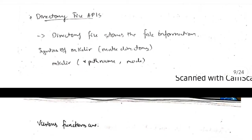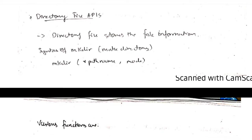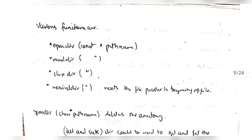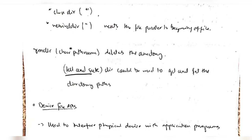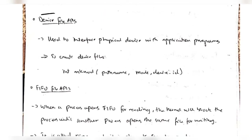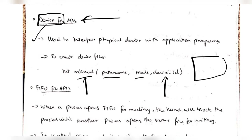Next we have the directory file APIs - the same operations as for device file APIs applied to directory files. We can use MKDIR to make a directory in a particular mode, open the file, read, close, and rewind to the first position, and use tell and seek functions to get and set directory paths. Whenever we connect a keyboard or mouse, it creates a device file - to access that information we use device file APIs. To create a device file we use MKNOD with the path name, mode, and device ID of the connected device.